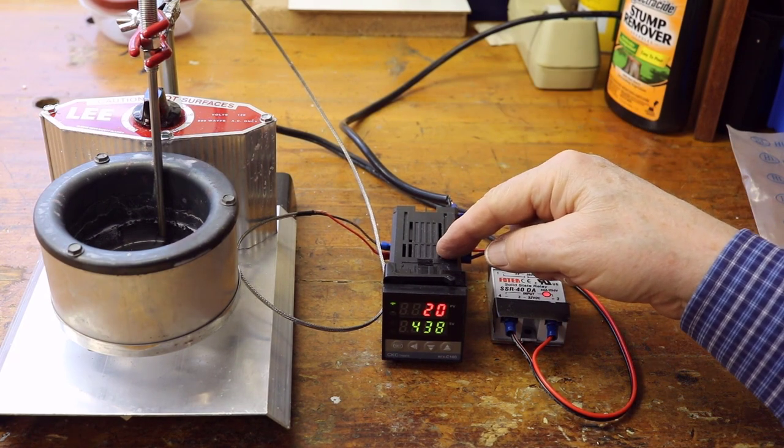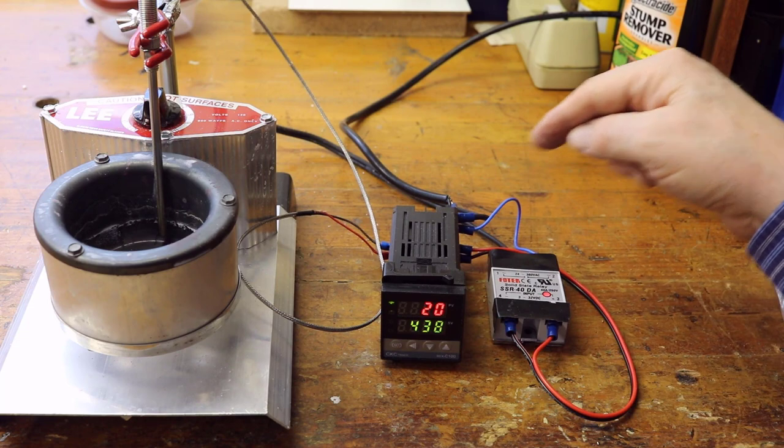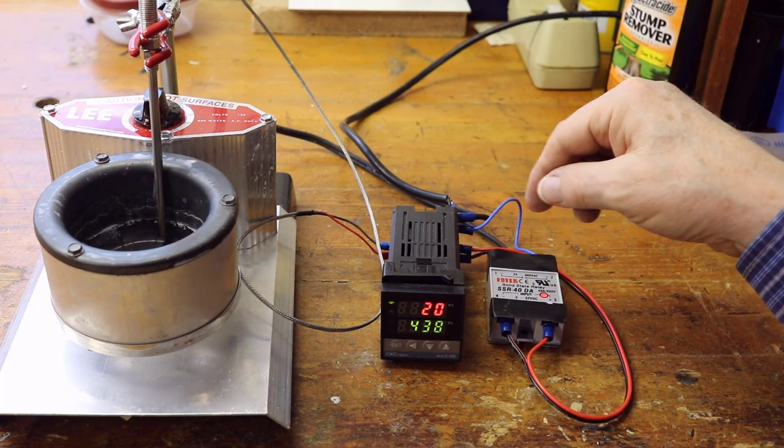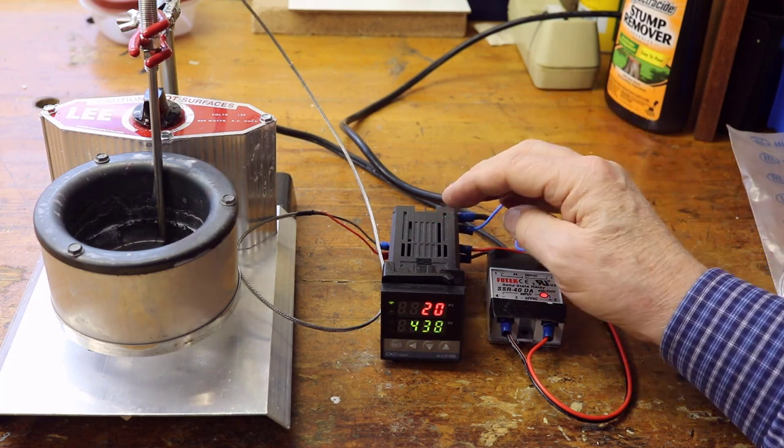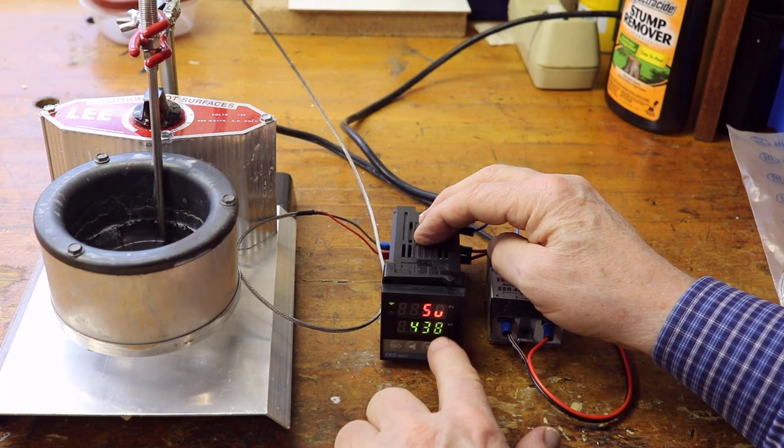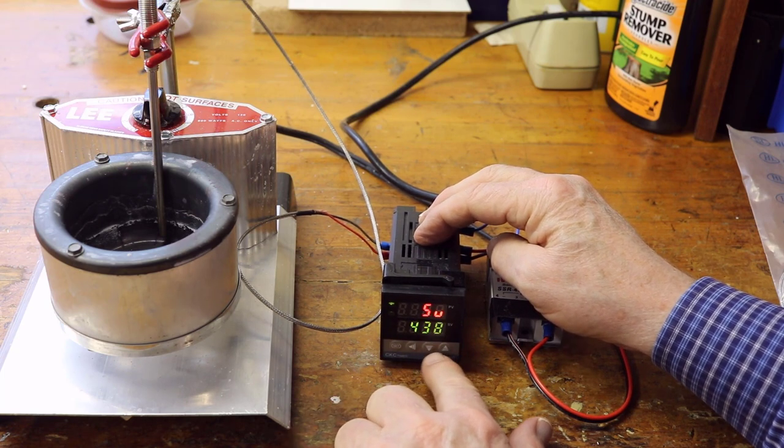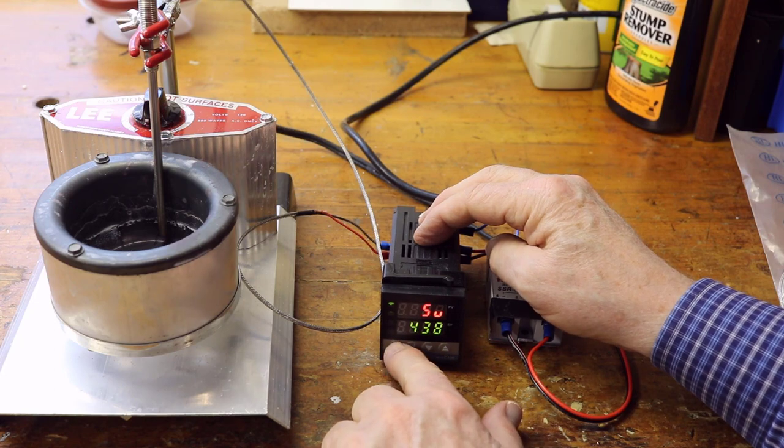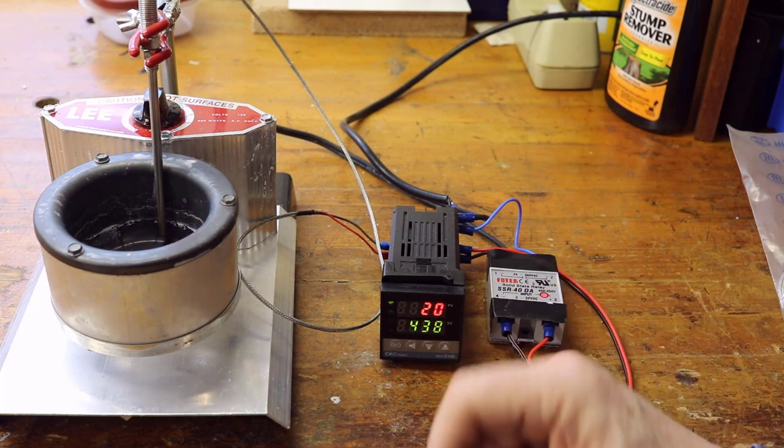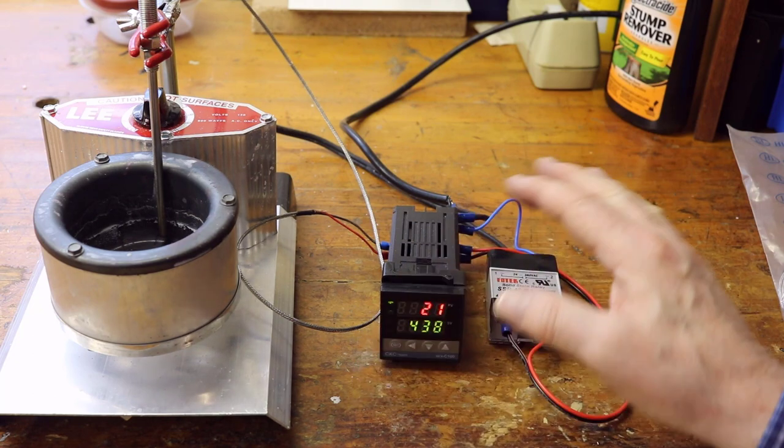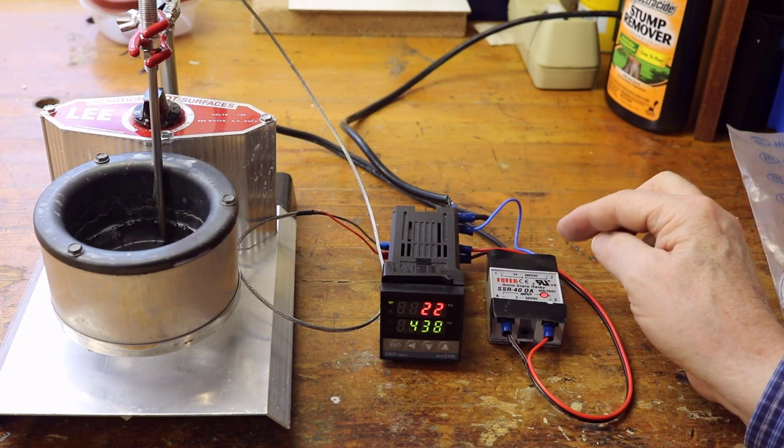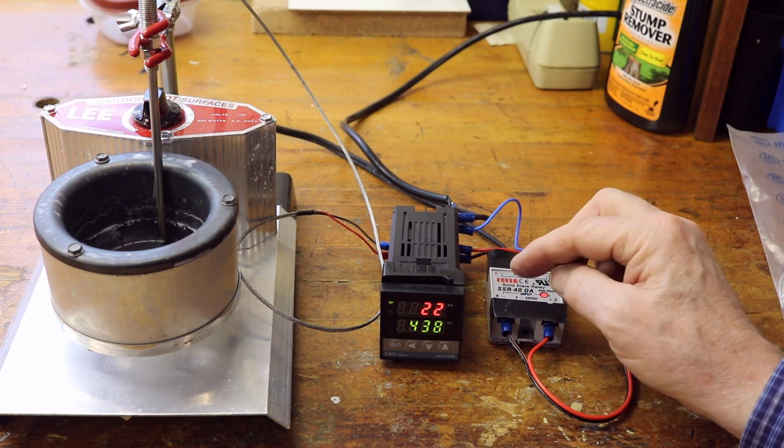I bought this controller and a non-usable thermocouple for a total of fourteen dollars delivered. It's pretty simple. You just hit the button briefly, it'll say SU, use the up and down buttons to set this, and then when you get the temperature you want you hit the set button again just briefly. And this is kind of dangerous, I've got 120 volts floating around on my bench, so this has got to go into a box.